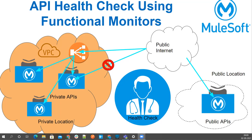There are multiple kinds of testing — white box testing, black box testing — and there is now a section called runtime monitoring. The monitors we are going to discuss fall under the runtime monitoring section. Today I'm going to pick a public, non-Mule API, so let me go ahead and log into my Anypoint Platform.